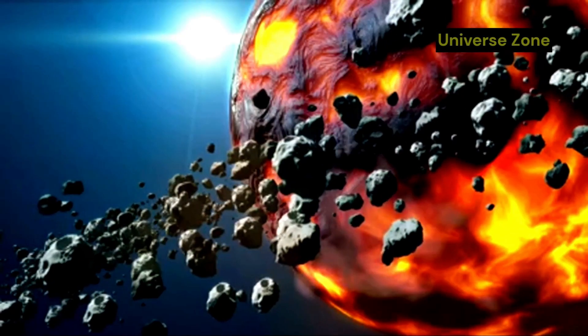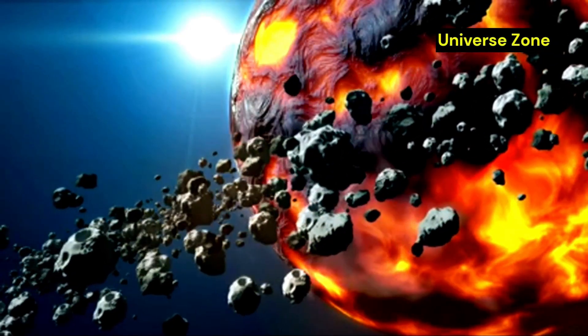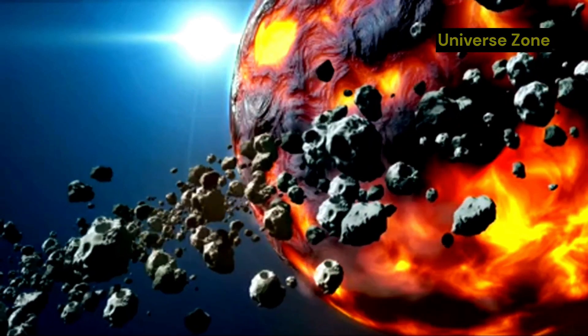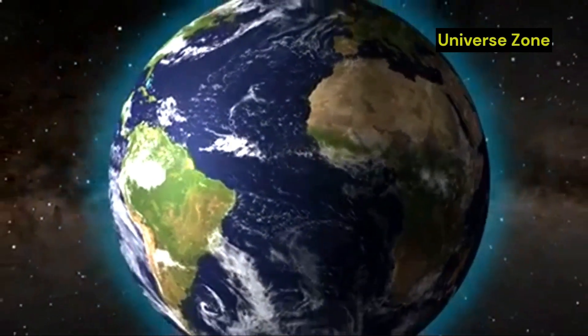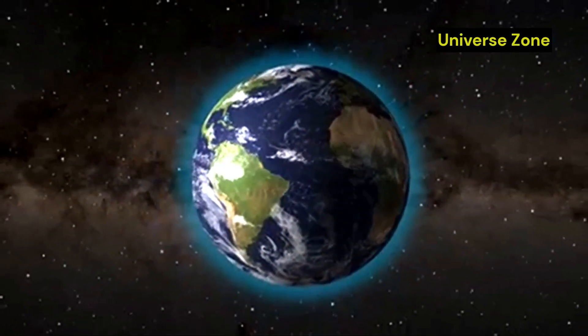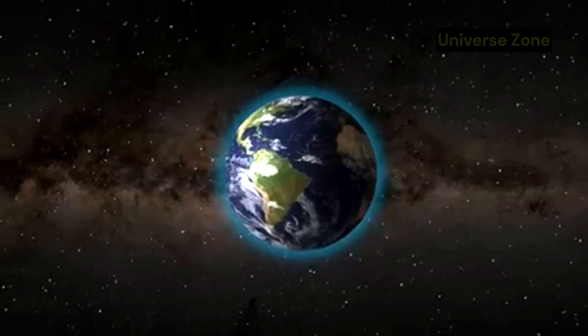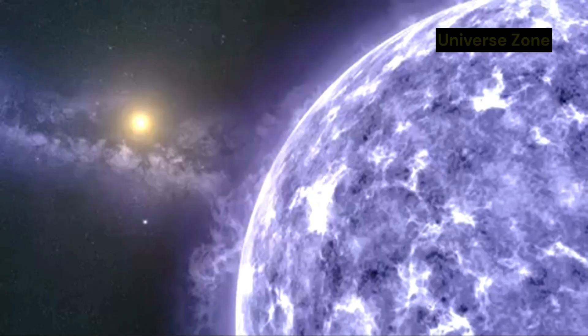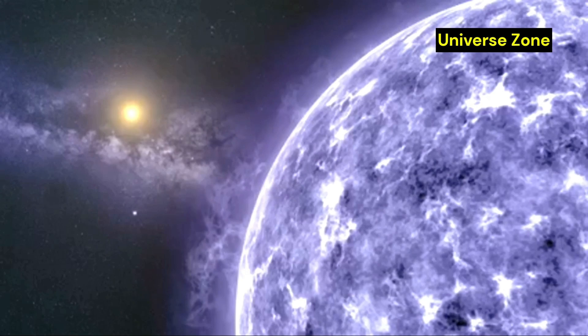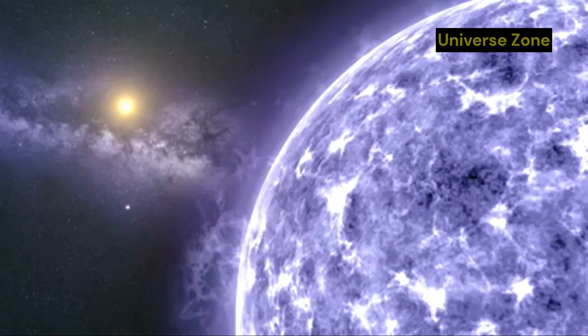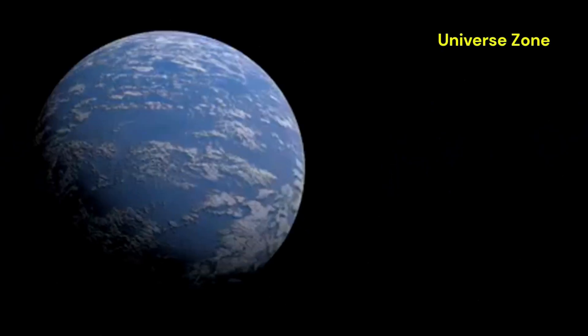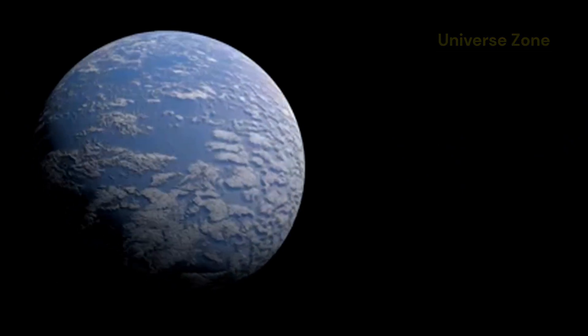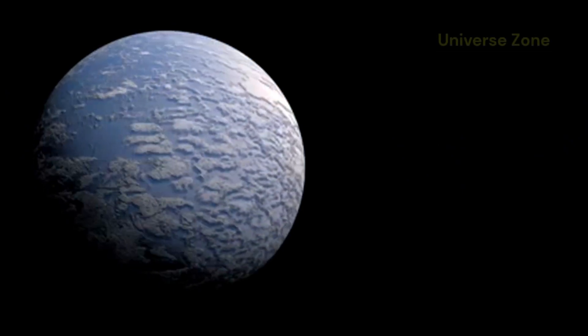The glow of Proxima b is significant because it suggests that the planet may have a molten core. A molten core is important for life because it can generate a magnetic field. A magnetic field can protect a planet's atmosphere from being stripped away by the stellar wind. The glow is also significant because it tells us something about the planet's history. The fact that the planet is still glowing suggests that it is relatively young. If Proxima b were older, its core would have cooled down and it would no longer be glowing.